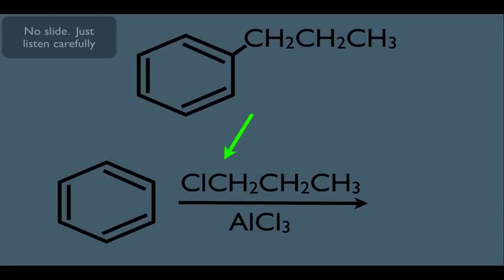But however, remember that when the Cl on the alkyl halide complexes with the AlCl3, it's going to make this carbon right here the carbocation. And that's the carbon we want to add to the benzene ring.